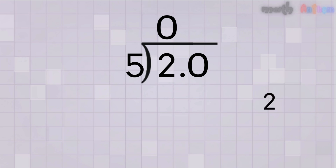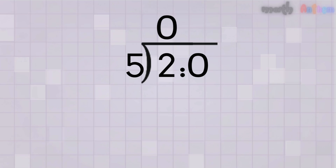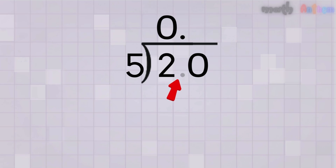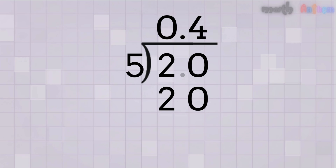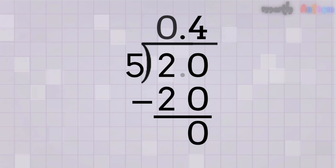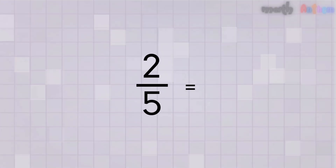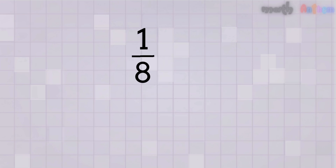Adding a decimal and a zero doesn't change the value of the number. 2 is the same as 2.0 or even 2.00 — they all mean the same thing. We also place a decimal point up in the quotient. Ignoring the decimal for a second, 2.0 becomes 20. How many times does 5 go into 20? That's easy — 4 times, because 5 times 4 equals 20. We write 4 in the quotient right after the decimal point. Subtract: 20 minus 20 equals 0 — no remainder, we're done. So 2-fifths as a decimal is 0.4.